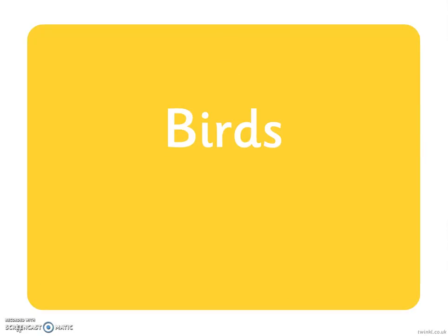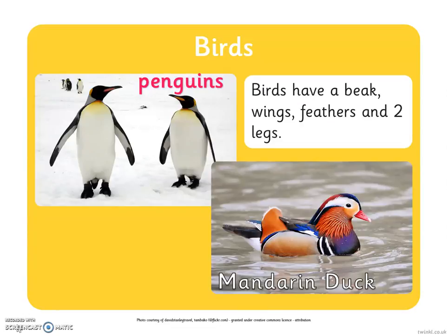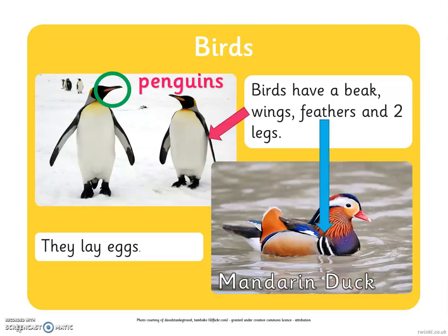The final group are birds. Here are some pictures of different birds. You can see there are penguins and a mandarin duck. Birds have a beak, wings, feathers and two legs. You can't always see the legs as they are beneath the water. They lay eggs too.